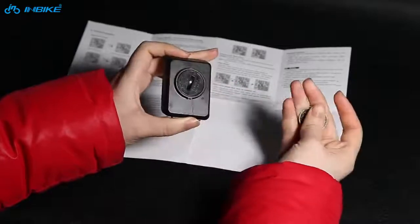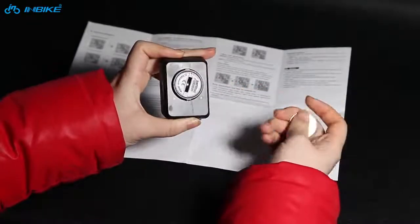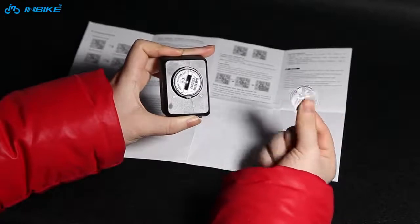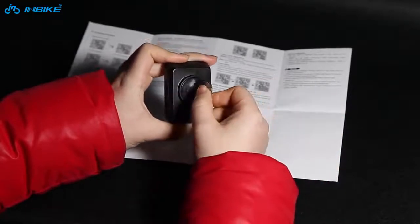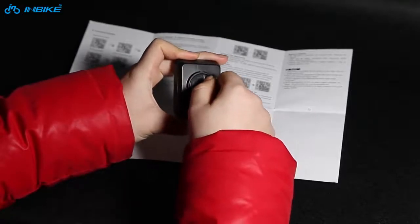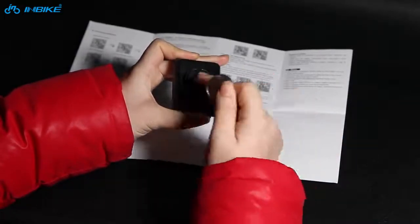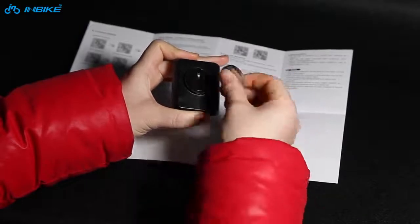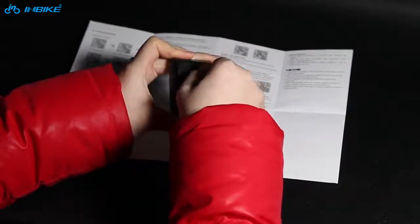Before that, first we need to install the battery. Use a coin to insert into the gap of the battery cover and rotate to open it. Then put the battery in, cover it up, and close it.